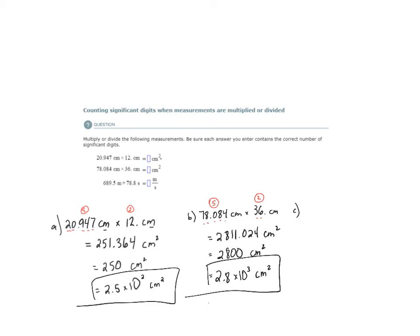Let's look at C. 689.5 meters divided by 78.8 seconds. So because we have the units of meters divided by seconds, we see that our units would be meters per second. But what about the number of significant digits for our final answer?